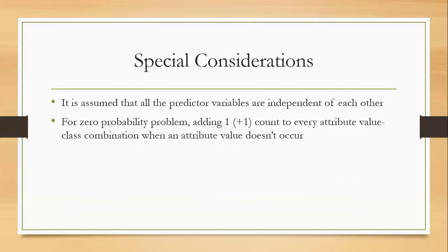Another is Naive Bayes comes with the assumption of independence, which means that all the predictors are independent of each other, which is very much difficult to happen in real life. And then another one is special considerations.